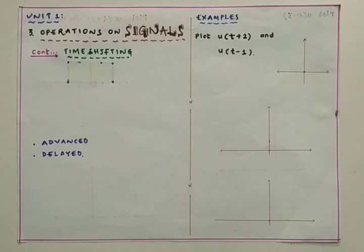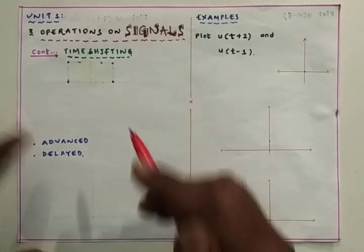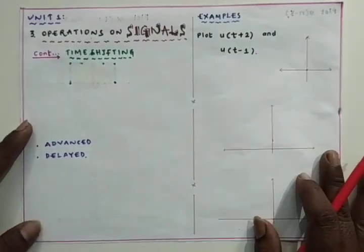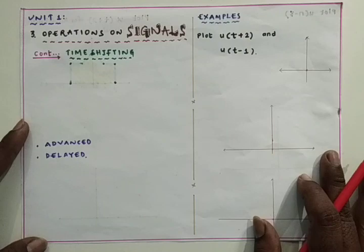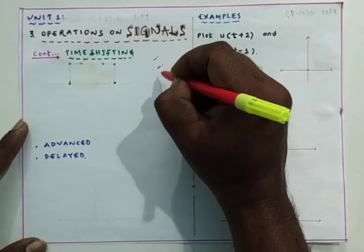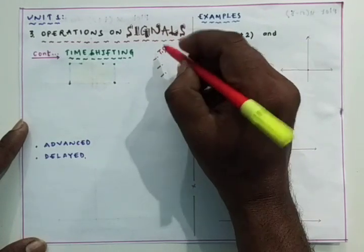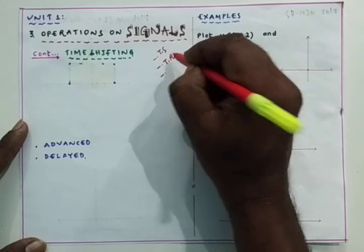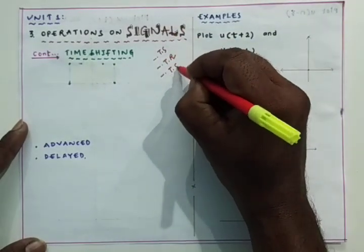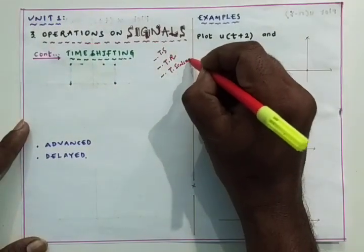In operations on signals, there are three operations we can perform: one is time shifting, another one is time reversal, and another one is time scaling. We are now discussing the first operation, which is the time shifting operation.